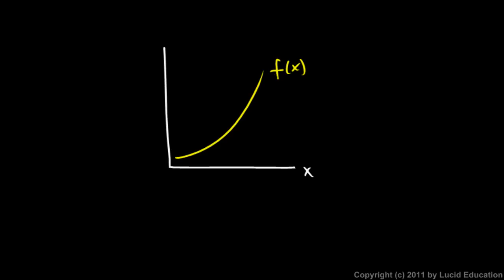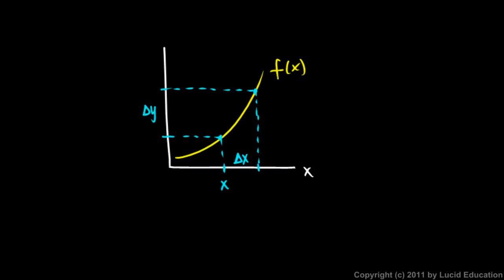Think back to first semester calculus. We have some function and we want to know the slope of the graph at some x value. We take the corresponding y value at that point, then go forward on the x-axis. We have this interval, which we call delta x, and we take the corresponding y value there. We have this interval on the y-axis, which we call delta y. The slope — rise over run — is just delta y over delta x.